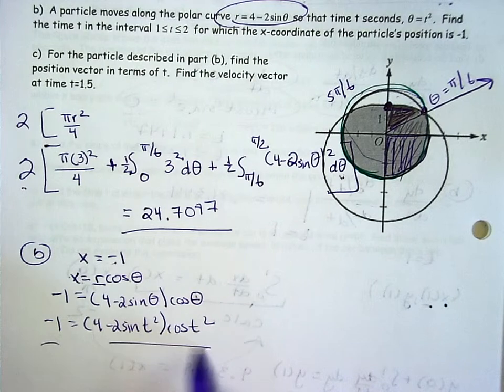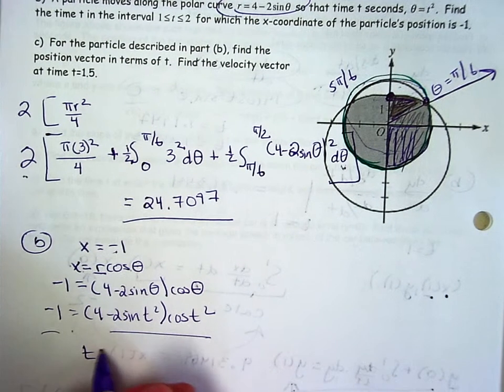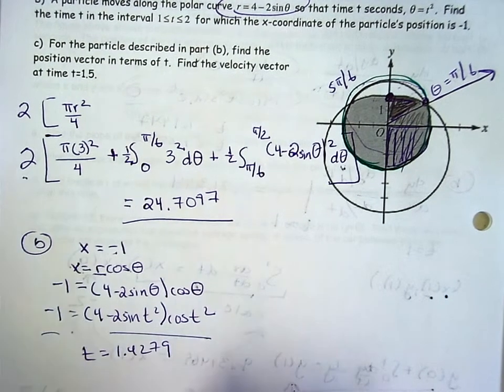Type this in your calculator, y1, y2, intersection, t = 1.4279.